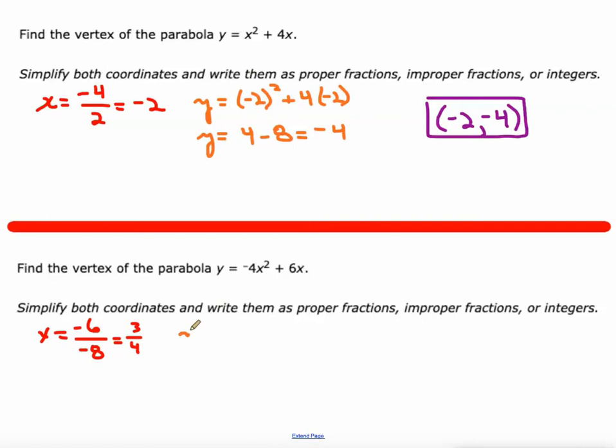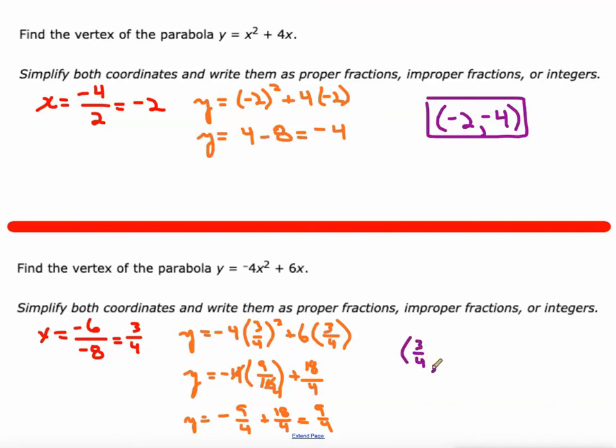y equals negative 4 times 3 fourths squared plus 6 times 3 fourths. So negative 4 times 9 sixteenths plus 18 fourths. So we can simplify this a little bit and make it, let's see, 4 goes into that once, 4 goes into that 4 times. So that will give us negative 9 fourths plus 18 fourths which of course is 9 fourths. And then we've got our vertex. So it's that 3 fourths that we plugged into the equation and the 9 fourths that we got as an output when we plugged 3 fourths in.